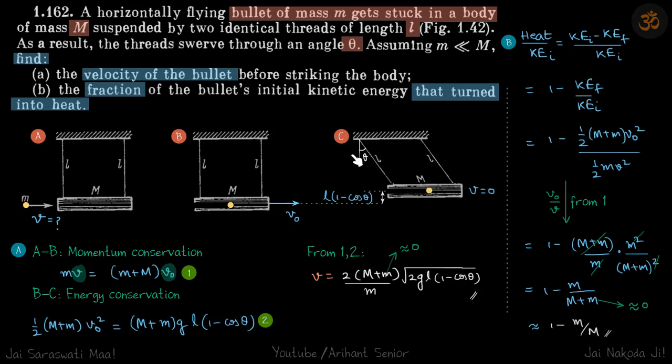We can measure this theta and that's all the information we need to find the velocity of the bullet. This whole setup is also called a ballistic pendulum, which is a standard experimental setup to find the velocity of any projectile.